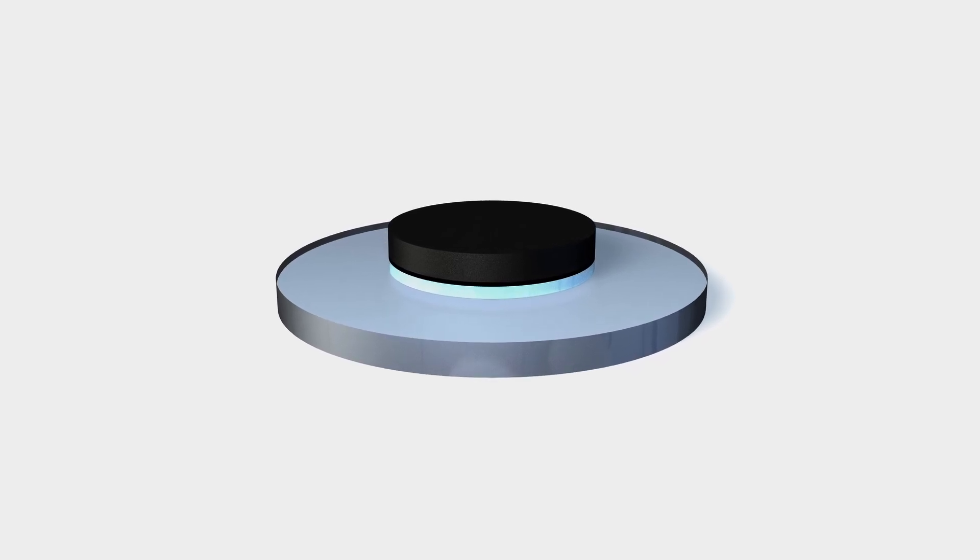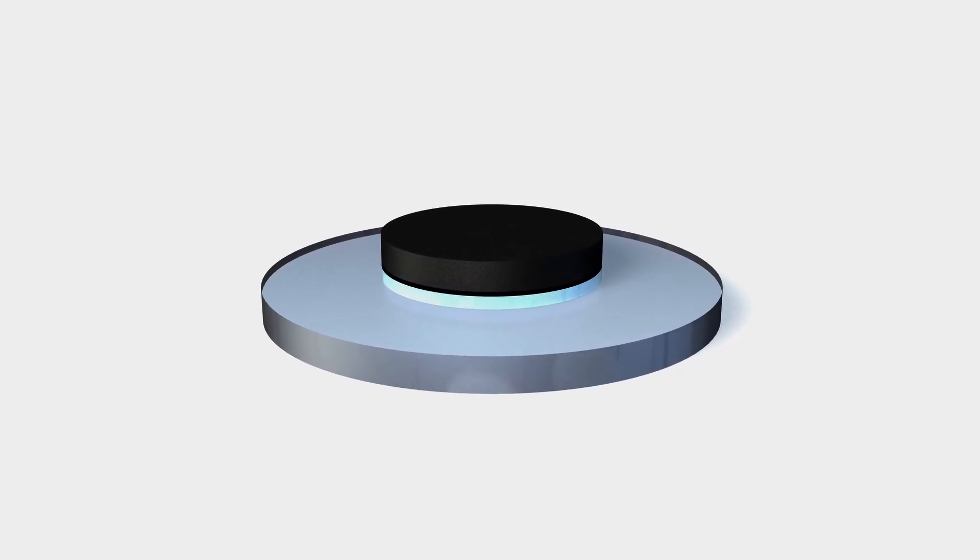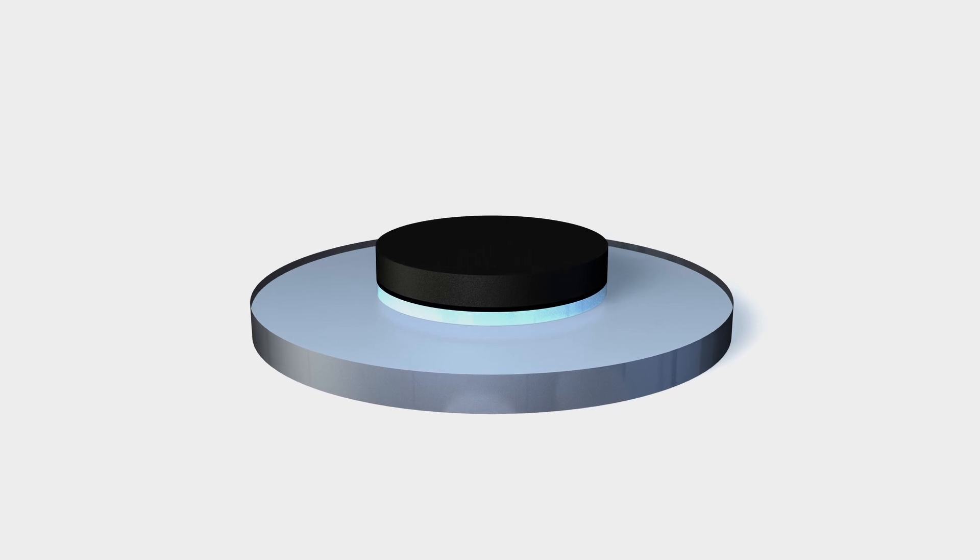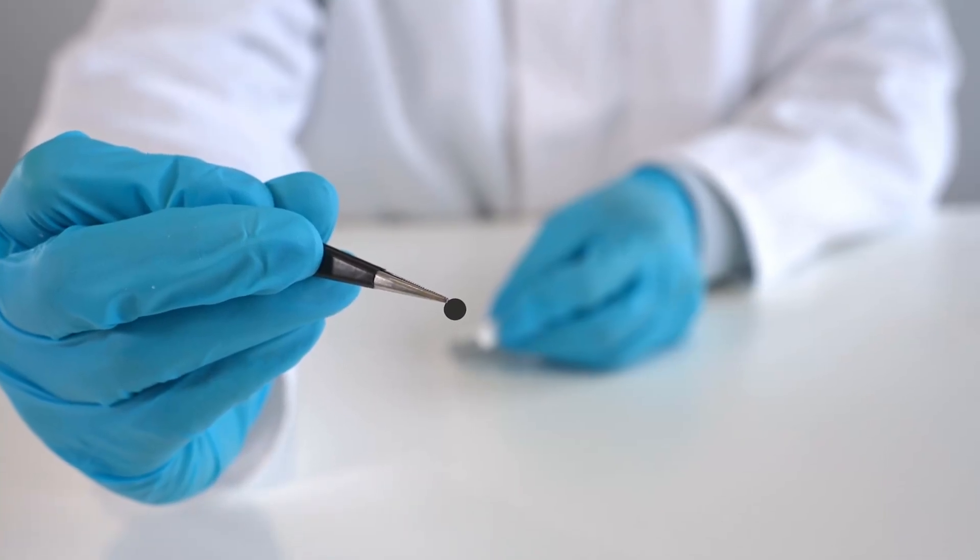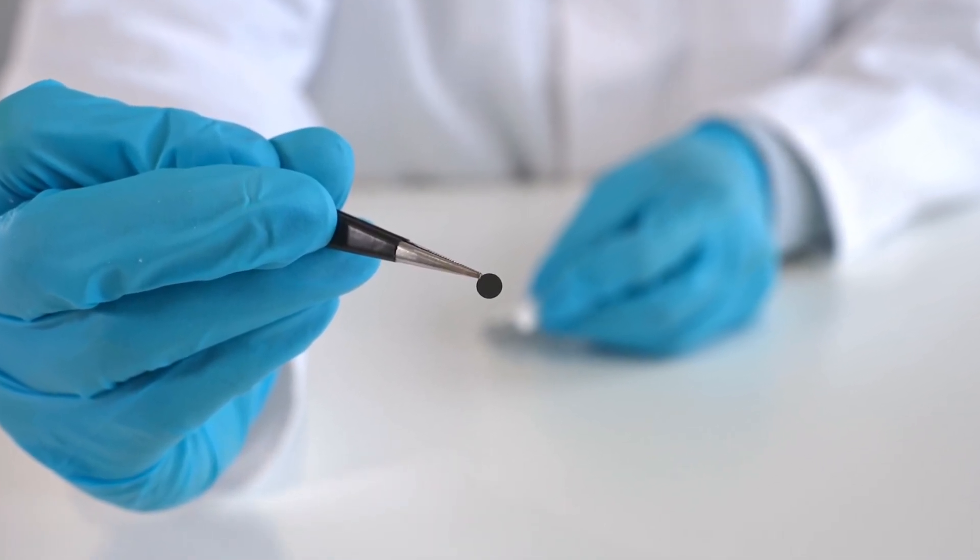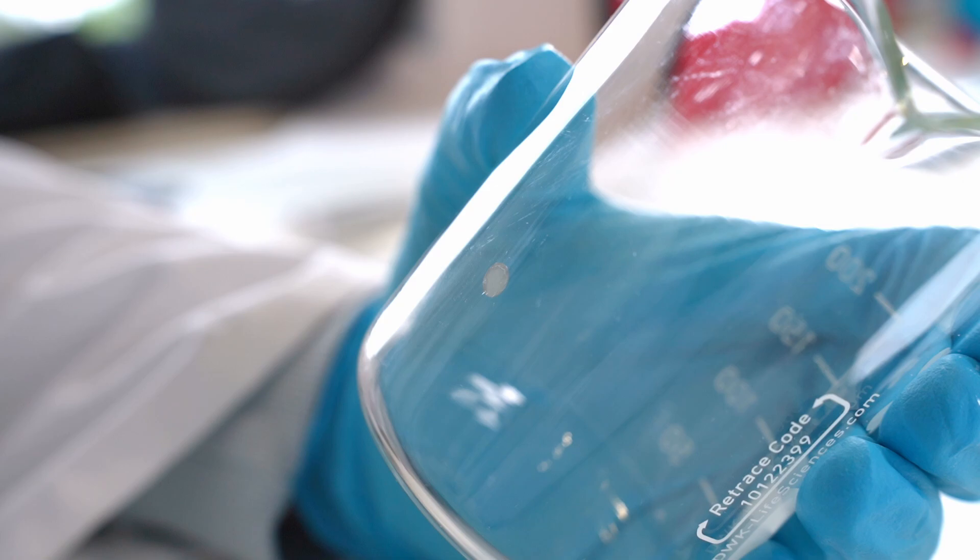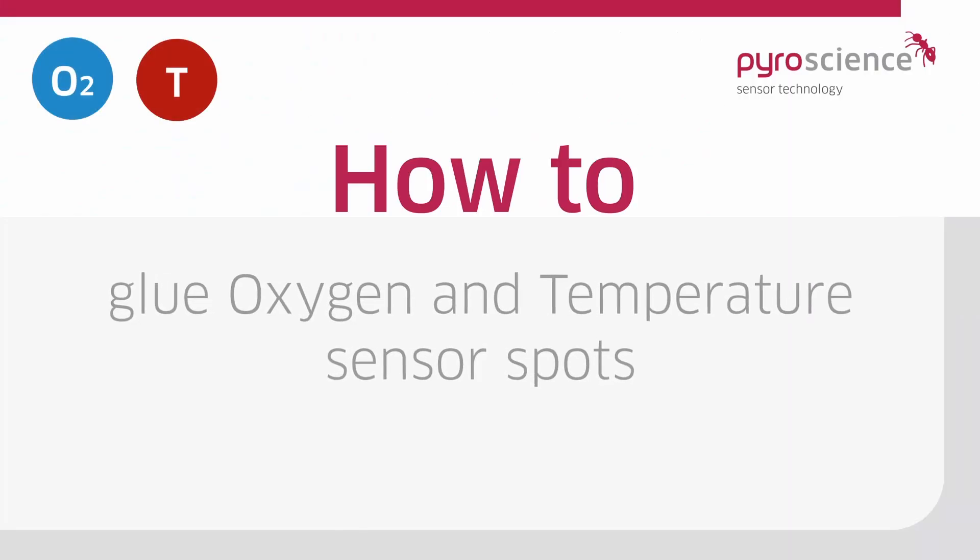Ensure that the sensor surface and the rim around the sensor spot remain free of glue, as glue on these areas can impact the sensor matrix. Glue on the sensor can lead to a significant increase of the response time. Ensure there are no air bubbles between the sensor spot and the container wall.